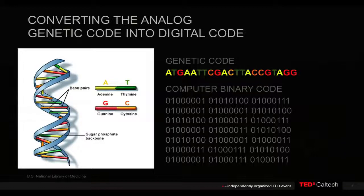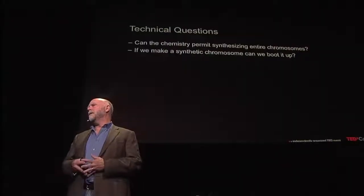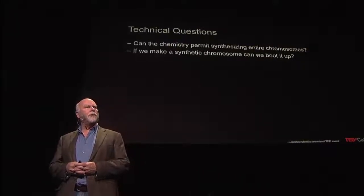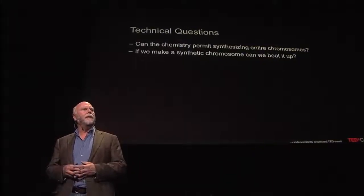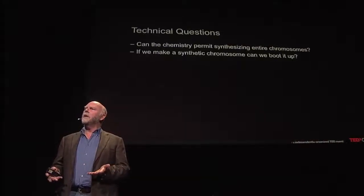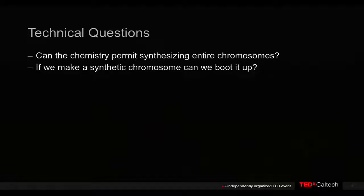Our challenge — for so many reasons of understanding this information, proving biological concepts, getting down to minimal cells — has been to now try and go in the other direction. As soon as we made the decision 15 years ago to try and get to synthetic life, there were two major problems. First, could we synthesize DNA at the size and the accuracy needed to get to biological self-replicating life?